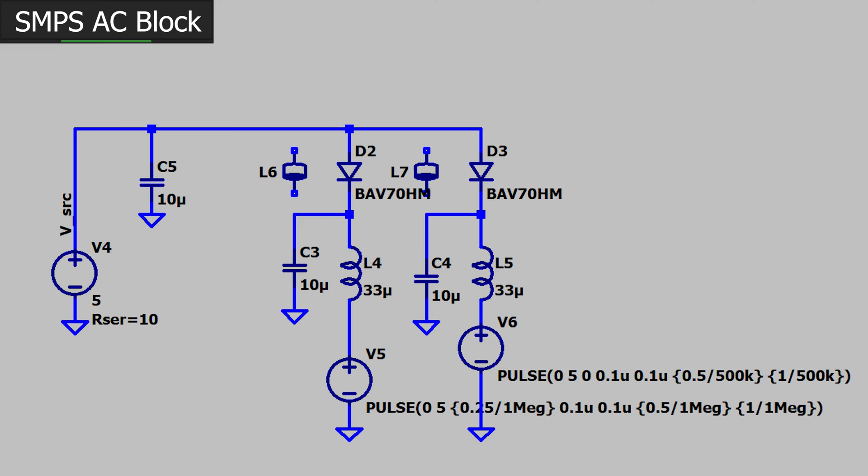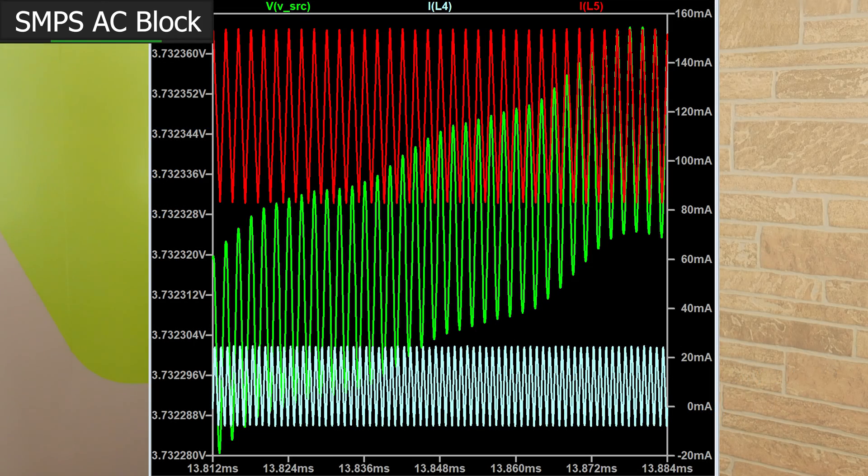Don't believe me? Allow me to demonstrate in LTSpice. I've added two loads that look a lot like DC to DC power supplies, though admittedly these are incomplete. I'm switching some inductors. One converter is switching at 500 kHz and the other at 1 MHz. The result is a pretty nasty source voltage waveform.